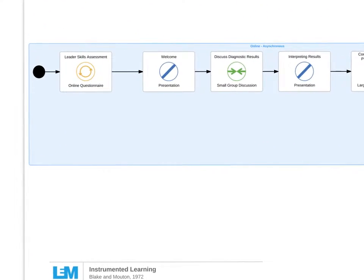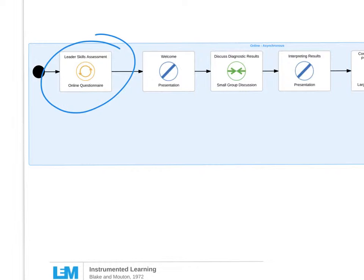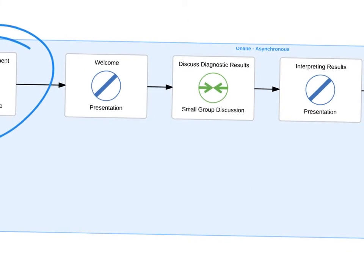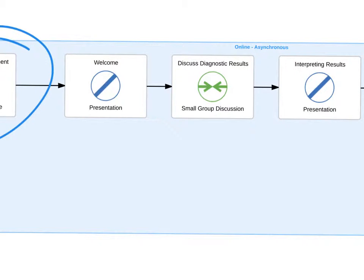Here we have an example where an online questionnaire — a leadership skills assessment — is provided. Many organizations use these types of assessments to understand personality types. Once this assessment is provided, the learner moves into a series of instructions: a welcome, and then an opportunity to discuss the results from that questionnaire.